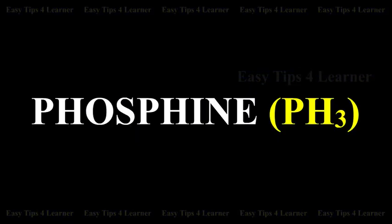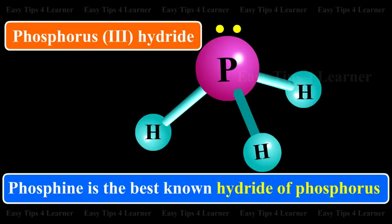Phosphine, PH3. Phosphine is the best known hydride of phosphorus.